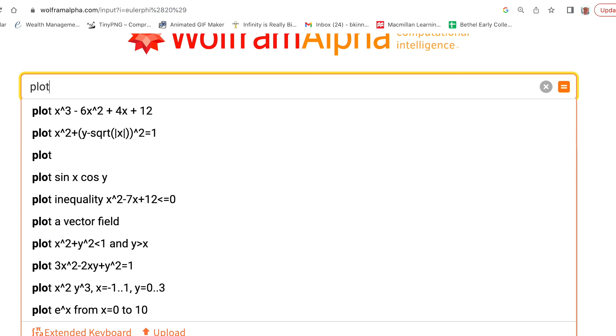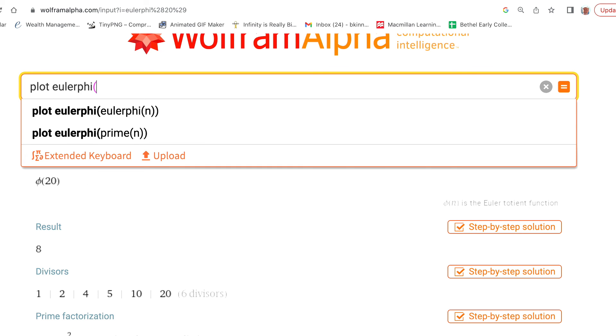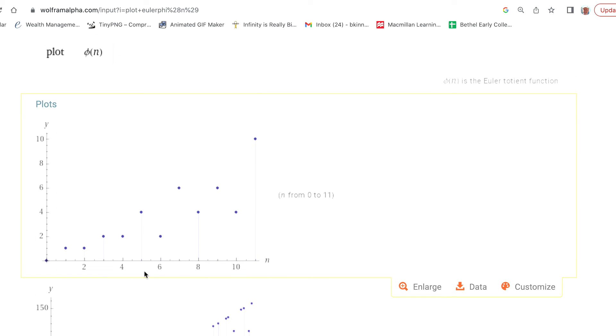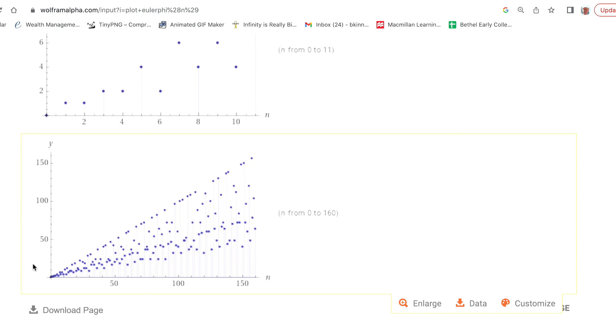You can also plot Euler phi of n and see a pretty interesting graph. Here are the first values when n goes from 2 to 11. What's more interesting is when you widen the window to let n go up to, for example, 160. These high values, if you think about it, must be when n is prime. You also have a bulk of values in the middle. Perhaps you can predict these moderately high values correspond to values of n that are powers of primes.